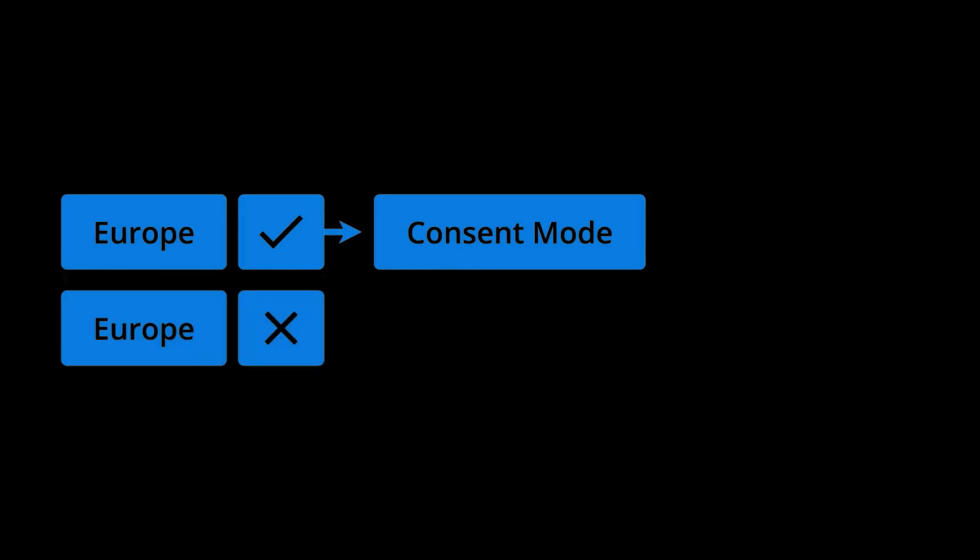If you're not tracking conversions from people located in Europe, then currently you don't need to implement consent mode. However, user privacy requirements are evolving, and it's probably best to be ready for more changes when it comes to data collection and privacy. And while you can track conversions into Google Ads without consent mode, using consent mode means available cookies will be used for more accurate reporting. Plus, with consent mode V2, Google Ads can use data modeling to fill in missing conversions.